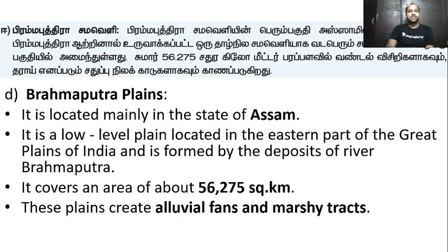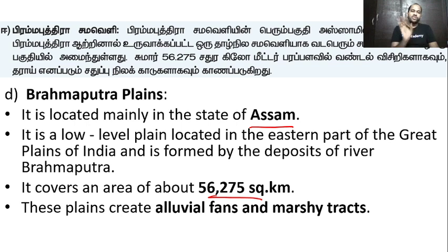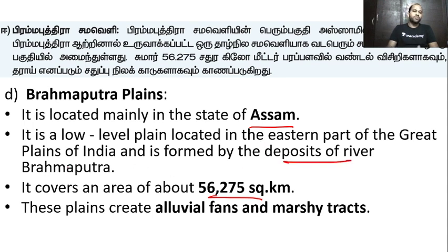Finally, the Brahmaputra Plains. The Brahmaputra Plains is located mainly in the state of Assam. It is the least extensive among the four. Rajasthan and Punjab are 1.6 lakh square km, while the Brahmaputra Plains is only about 56,000 square km. It is the eastern part of the Great Plains of India.